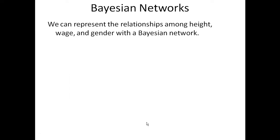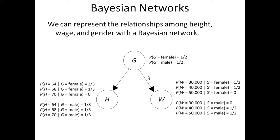We can represent the relationships among height, weight, and gender with a Bayesian network. It's a fairly simple Bayesian network. Because height and wage are independent given gender, we created a directed acyclic graph called the DAG and draw edges from gender to height and gender to wage. Then for gender, we have its prior probabilities. The prior probability of gender equals female is one-half; the prior gender equals male is one-half. For the variables height and wage, we have their conditional probabilities given the value of their parents.